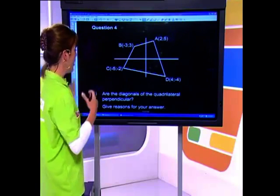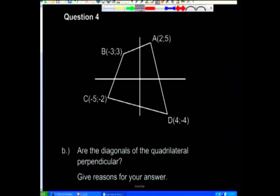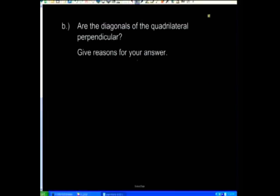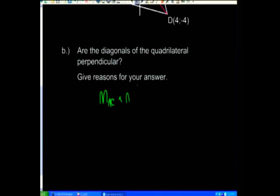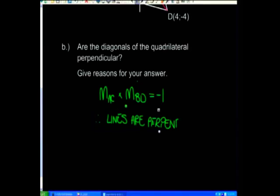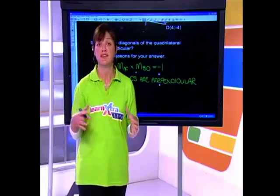Are the diagonals of the quadrilateral perpendicular? Yes, because we've proven that the two diagonals intersect at a 90-degree angle. To give a reason: the gradient of AC times the gradient of BD equals 1 times negative 1, which equals negative 1. Therefore the lines are perpendicular — that's the statement that proves the two lines are actually perpendicular.